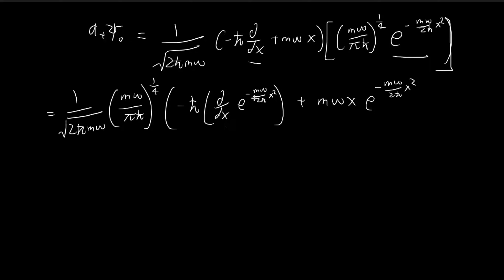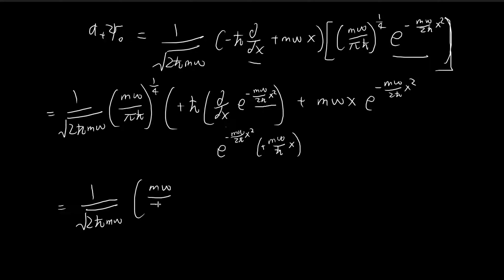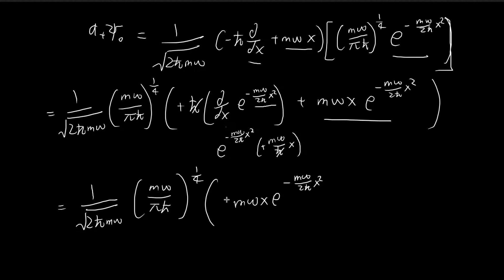This is really just a case of differentiation. We apply the chain rule to the exponential. We retain the exponential and differentiate the exponent — the 2 comes down as a coefficient, giving us −mω/ℏ · x. The negative signs cancel out, and the ℏ also cancels, so we arrive at mω · x · e^(−mω/(2ℏ)x²). This is the expression for a+ψ₀.